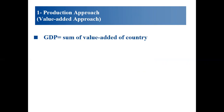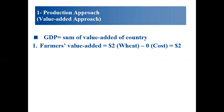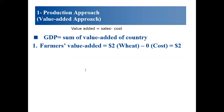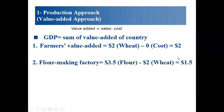The value added is the sum of value added across a country. For example, a farmer produces wheat with a cost of zero and sells it for $2. The value added equals sales minus cost. He then sells the wheat to a flour-making factory. The wheat becomes the cost at that stage, and the factory sells the flour for $3.50. The value added at this stage is $1.50.